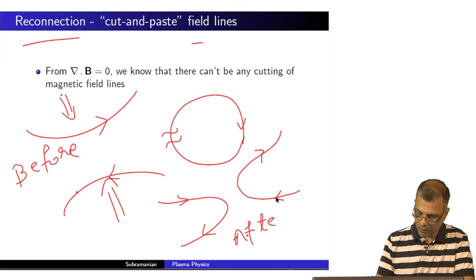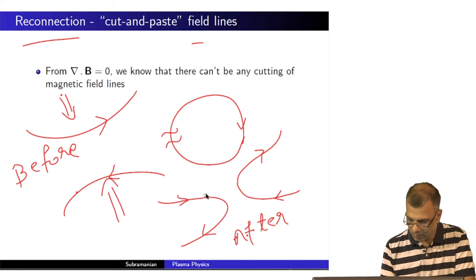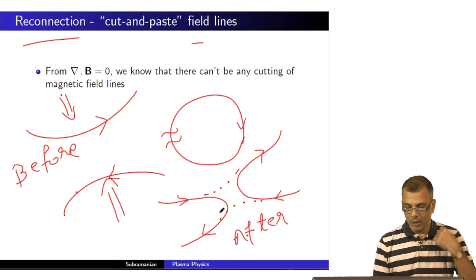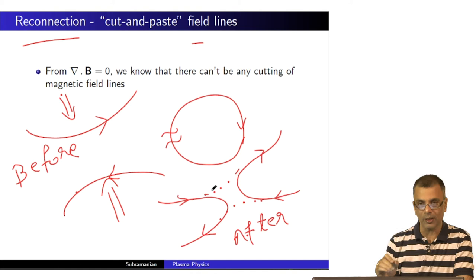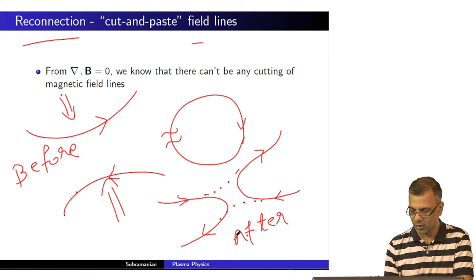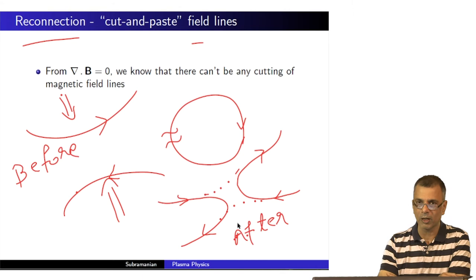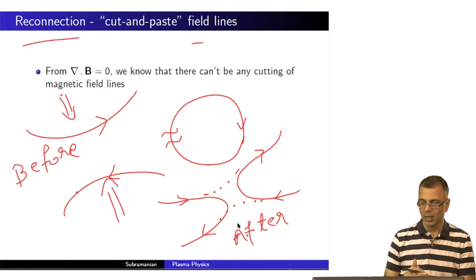This is the after configuration. What happened was: this used to be like this and this used to be like this, but now these fields have reconnected. This field line has connected with that field line and this field line is connected with that field line, changing the configuration. This was what it looked like before and this is what it looks like afterwards. This is a very common cartoon to illustrate the phenomenon of reconnection, but bear in mind this is very simplistic — it shows something in just two dimensions. In reality, reconnection is a three-dimensional phenomenon.